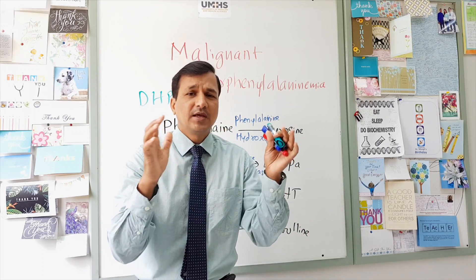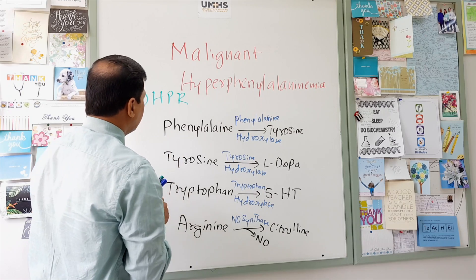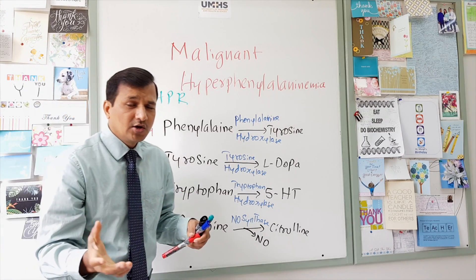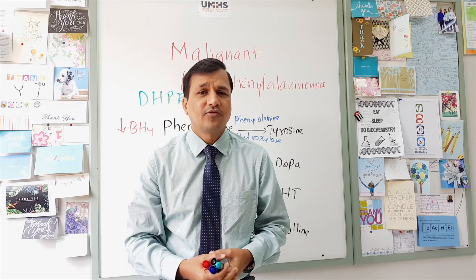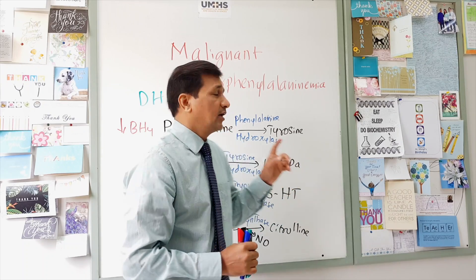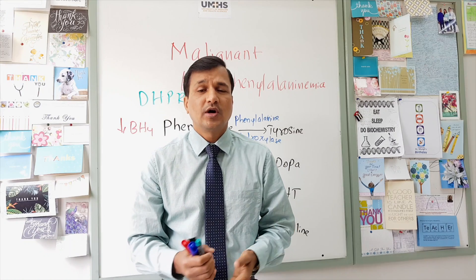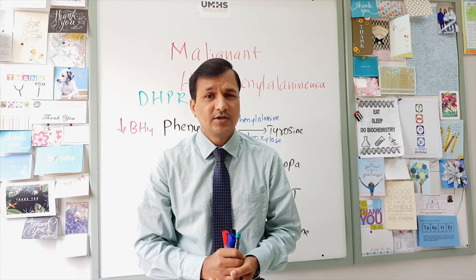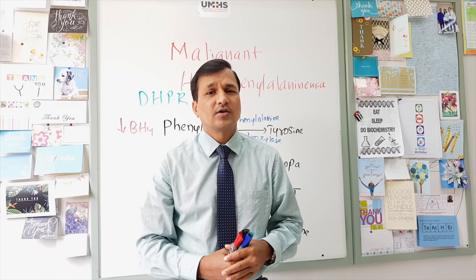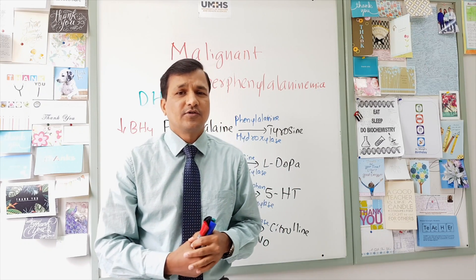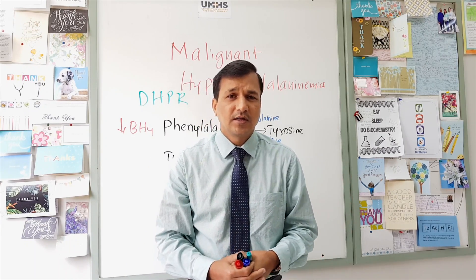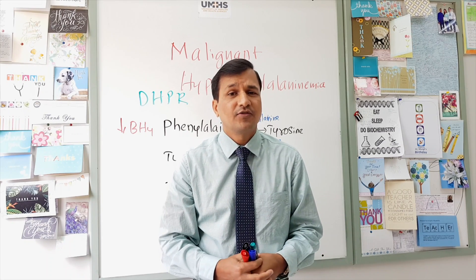This means there will be an overall deficiency of tetrahydrobiopterin (BH4) in the tissues. Since BH4 is required by phenylalanine hydroxylase to convert phenylalanine into tyrosine, its deficiency leads to decreased conversion and accumulation of phenylalanine. That phenylalanine then enters alternate metabolic pathways and is converted into phenylpyruvate, phenylacetate, and phenylethanolamine, which appear in the urine, producing the signs seen in phenylketonuria.